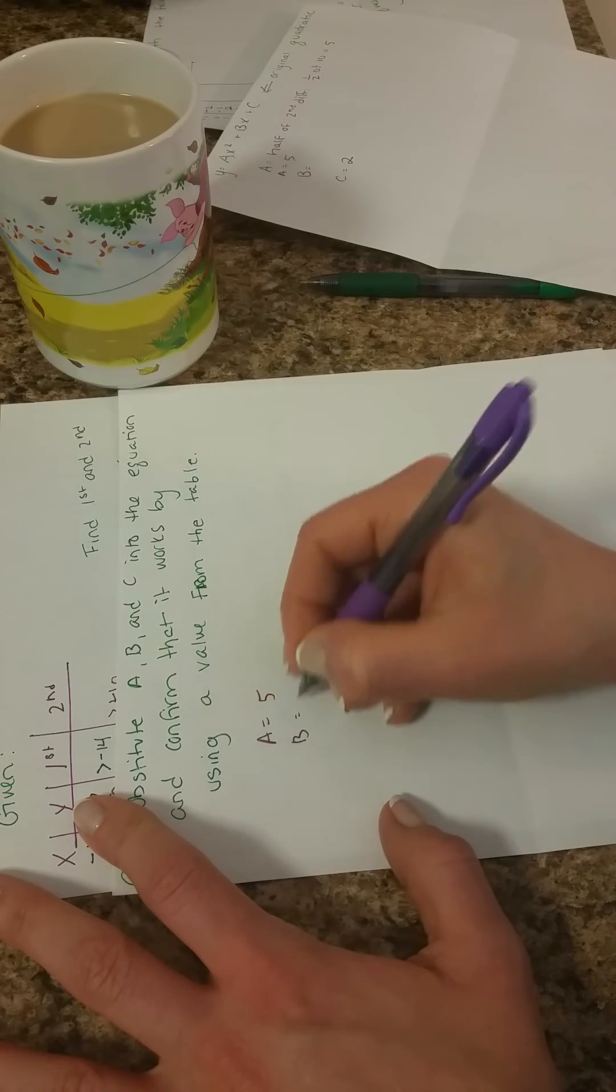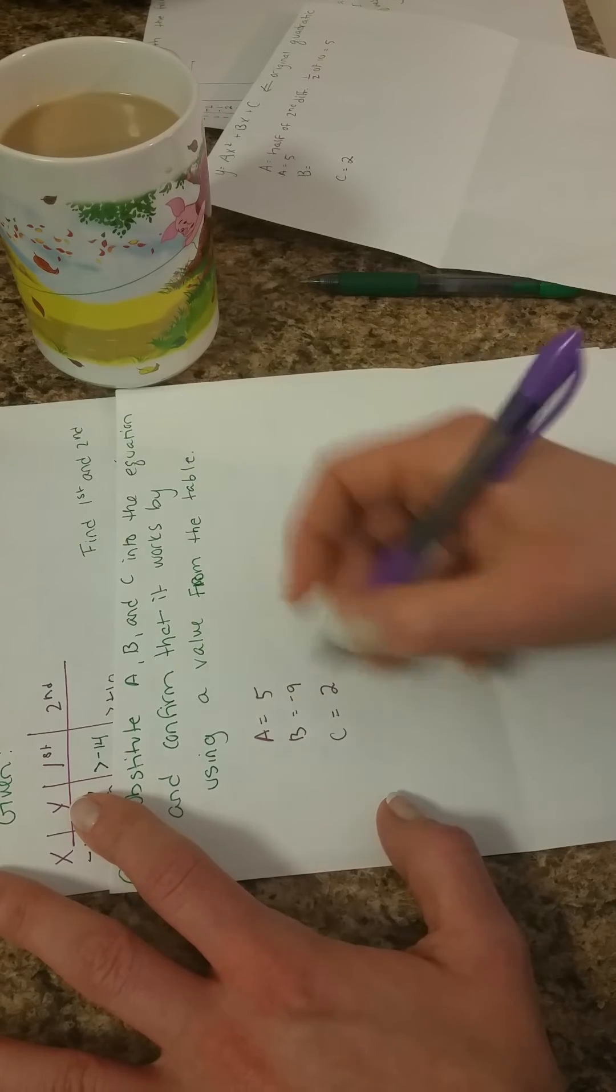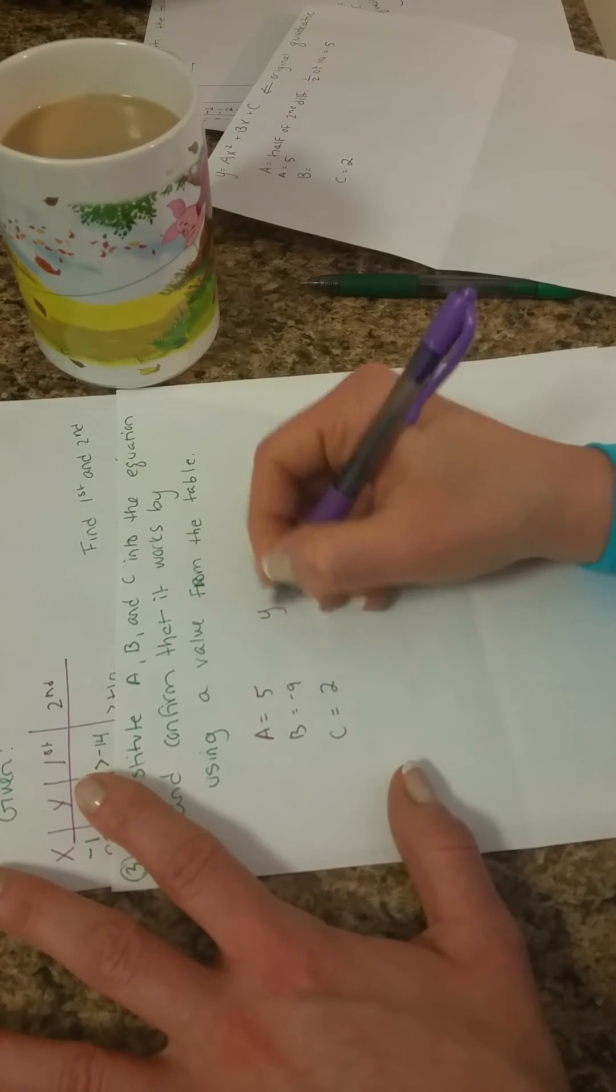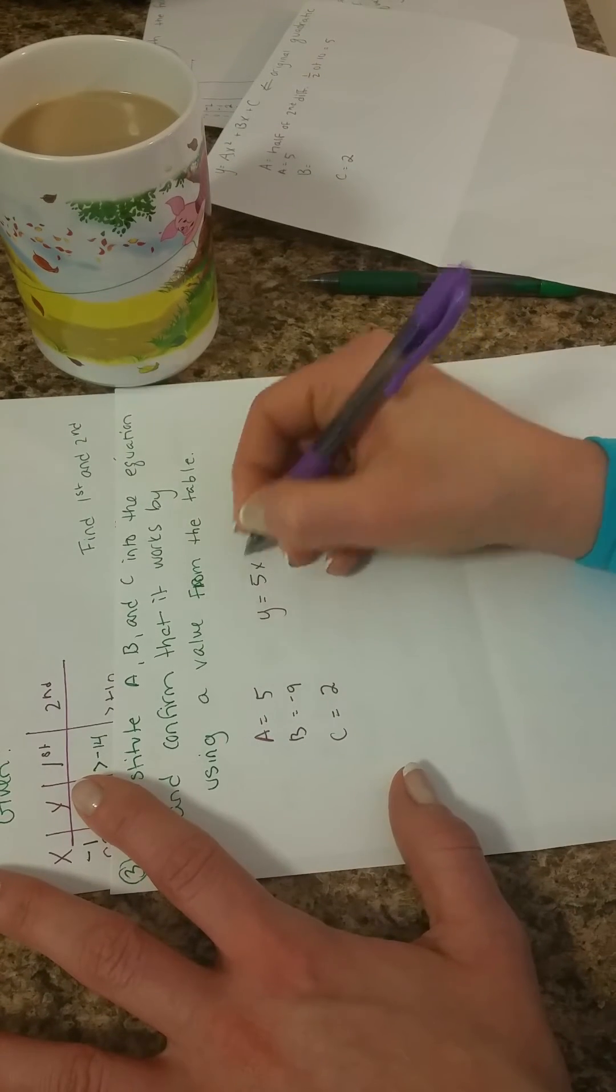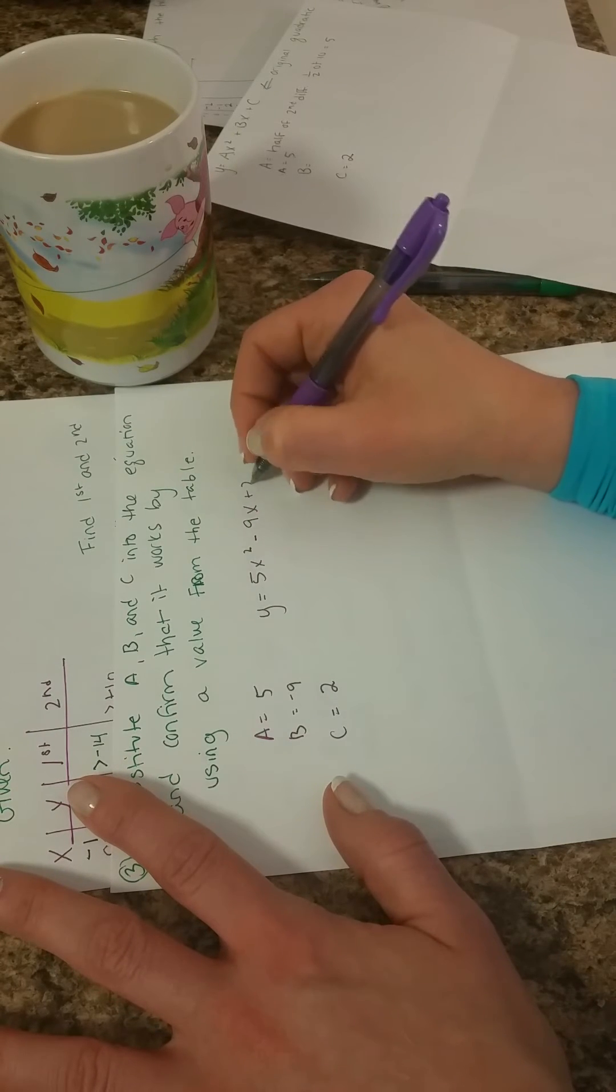B equals negative 9, and C equals 2. So our final equation would be y equals 5x squared minus 9x plus 2.